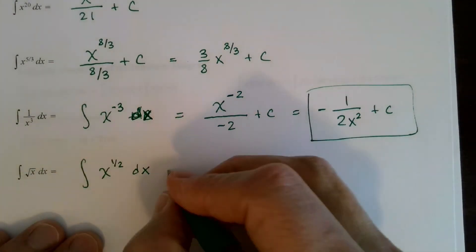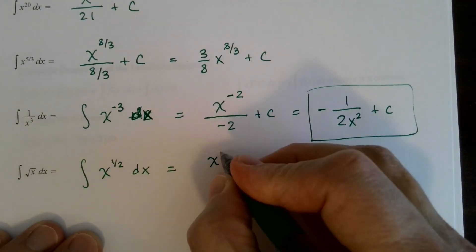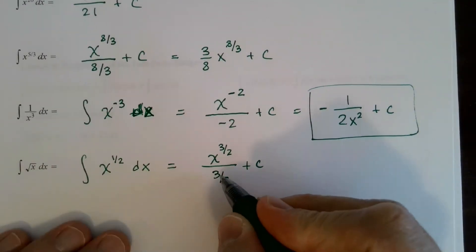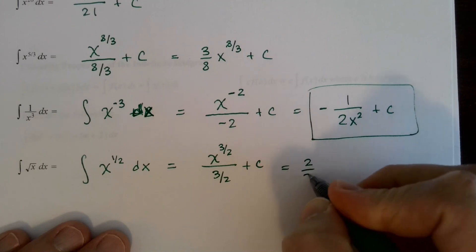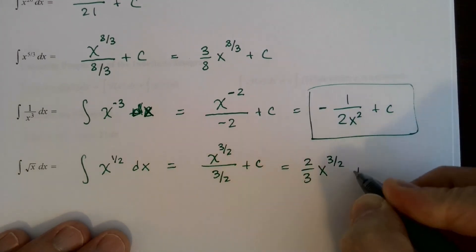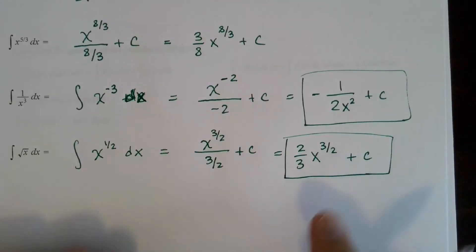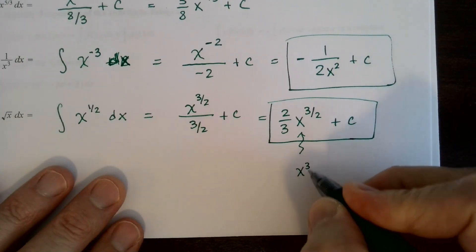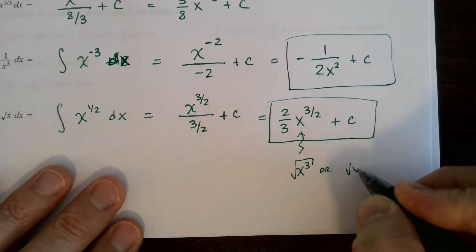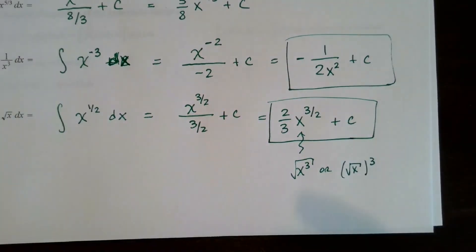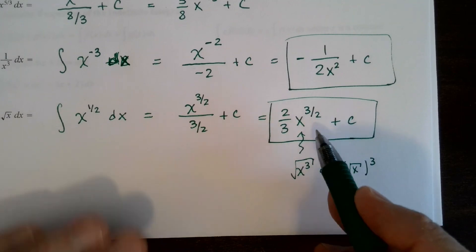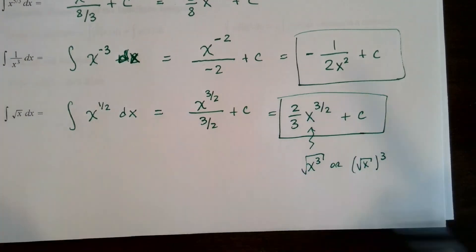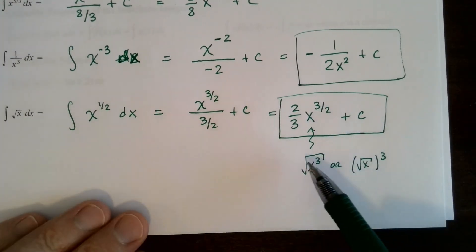The power is one-half, so by the power rule, add one to one-half: one-half plus one is three-halves, divided by three-halves, plus c. Dividing by three-halves is the same as multiplying by two-thirds. So the antiderivative of the square root of x is two-thirds x to the three-halves plus c. This can also be written as the square root of x cubed, either way. I'll typically leave it in fractional form.